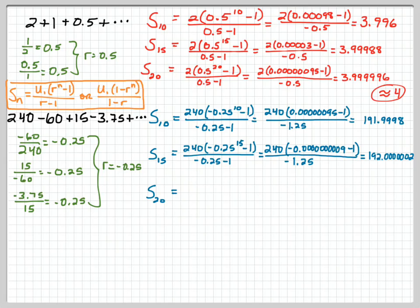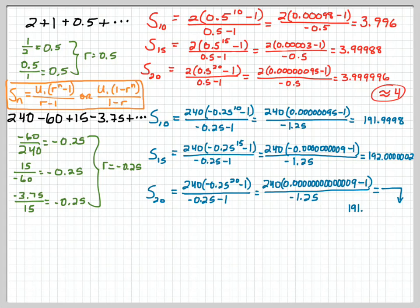So as we do our summation up to 20, we have 240, negative 0.25 to the 20th, and so on. We're going to expand this, and now we've got 13 zeros on here, and we're going to minus 1. So again, we're going to have a small negative number, divide by a negative number, so we're going to come out with a positive, and that positive is 191.9999999998. Yikes.